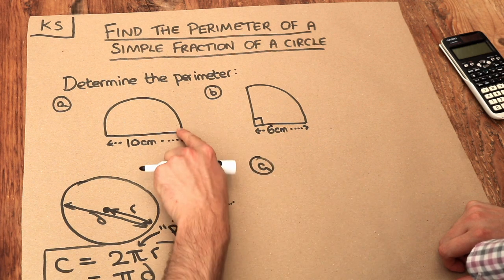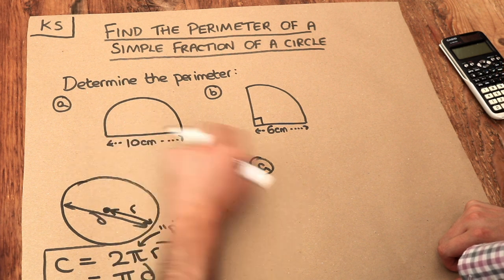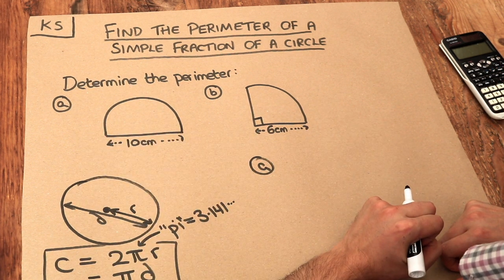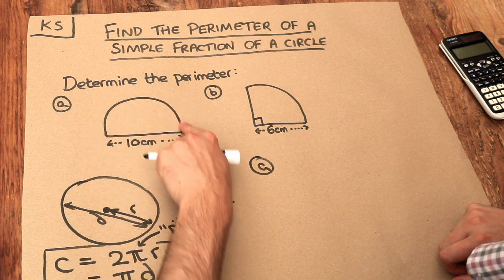Notice that we've got two lengths here. We've got this curvy length at the top and we've got this length at the bottom, this straight length. So we're going to add the two lengths together to get the full perimeter of this shape. Let's work out the length of this curvy bit first.